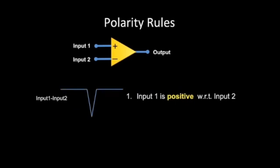Similarly, if we showed a slightly different tracing, this time with a downward deflection, we could say that input 1 is positive with respect to input 2, or input 2 is negative with respect to input 1.